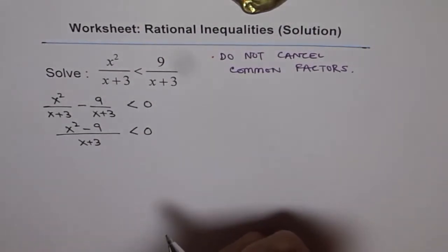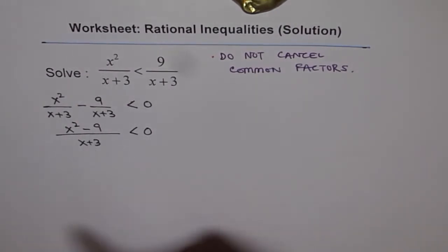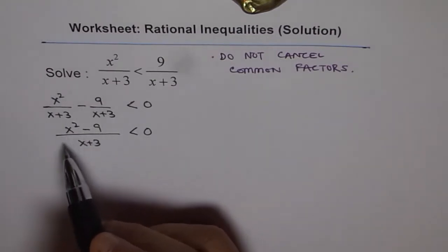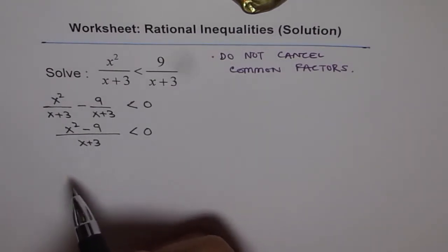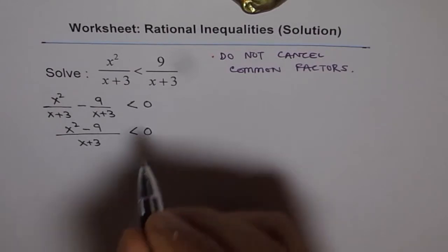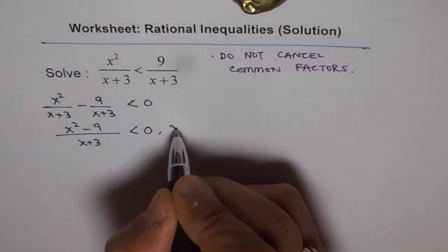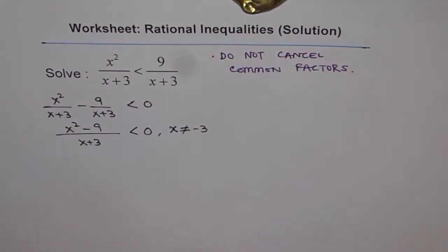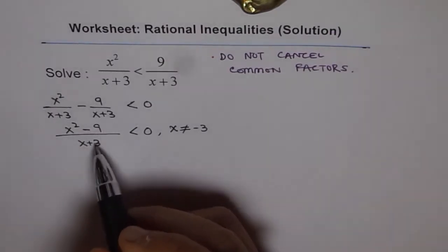Now this is a rational function — a polynomial over another polynomial, a perfect rational function. In any rational function, once you write it in factored form, it is always a good time to write down the restrictions. So we write the restriction: x is not equal to minus 3, since that will make the denominator 0 and the expression undefined.